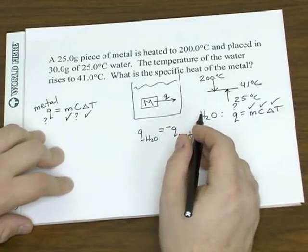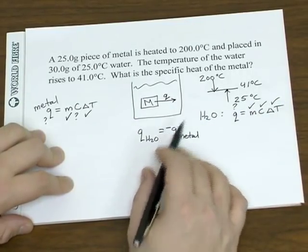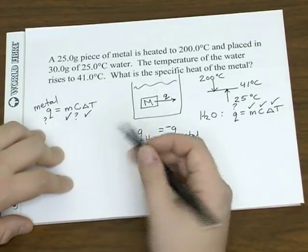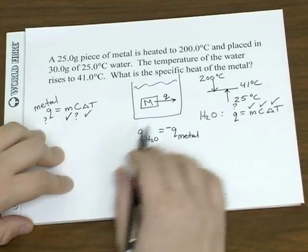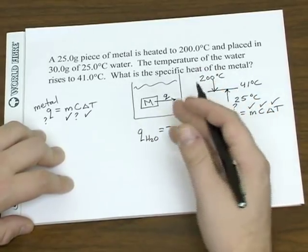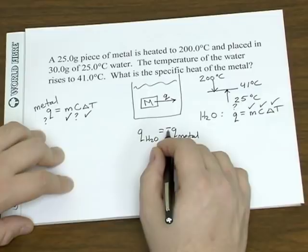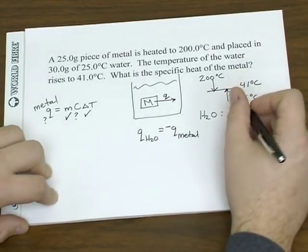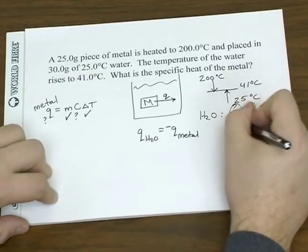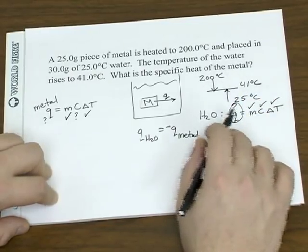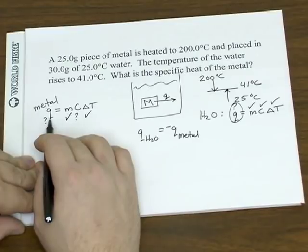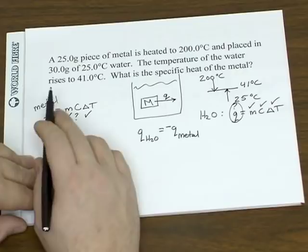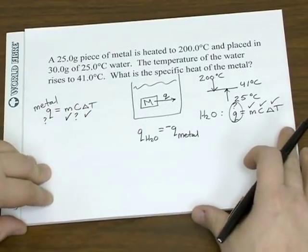And we assume that the heat gained by the water is equal to the heat lost by the metal. The only difference is the sign. For the water it would be an endothermic process, which is usually shown by a positive sign. The metal is releasing the heat, which is an exothermic process, and we usually show that by a negative sign. So we can find the heat absorbed by the water that should equal the heat lost by the metal. So once we know Q, then we can find the specific heat of that metal.